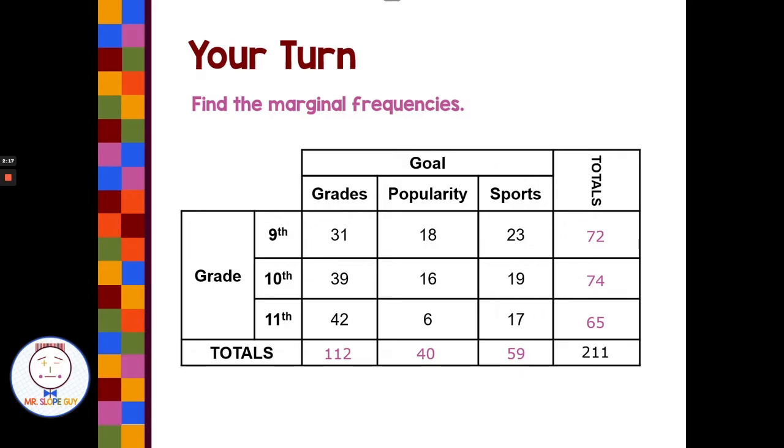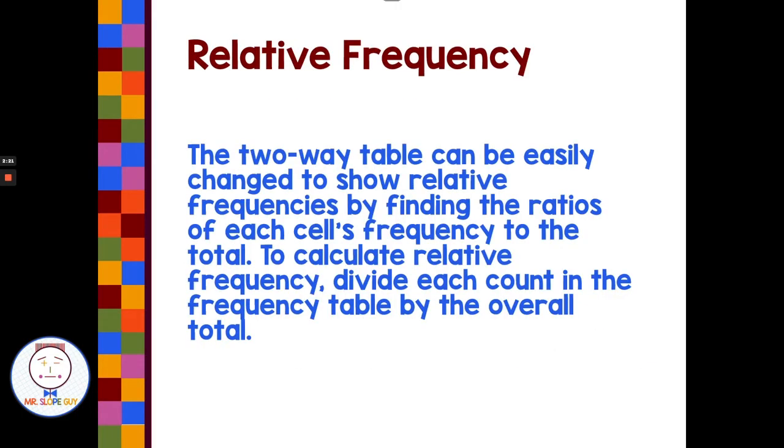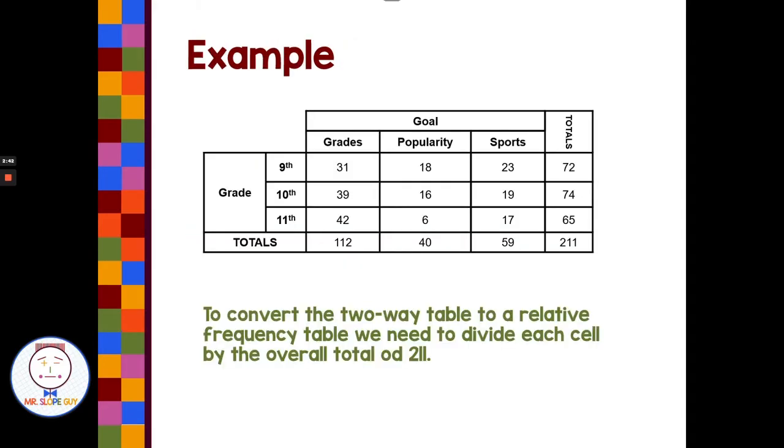Now we could take this and convert it into a relative frequency table. And that's our goal today. So the two-way table can easily be changed to show relative frequency by finding the ratio of each cell's frequency to the total. So to calculate relative frequency, divide each count in the frequency table by the overall total.